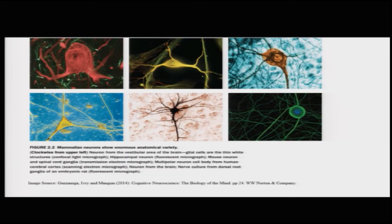This is just an idea of different kinds of mammalian neurons that have been documented. You can see, for example, on the top left the hippocampal neuron, the mouse neuron, spinal cord, ganglia and so on. This is a demonstration sourced from Gazzaniga's book.